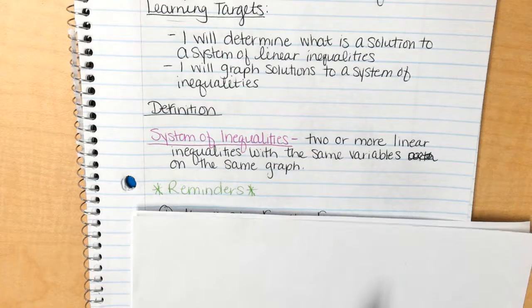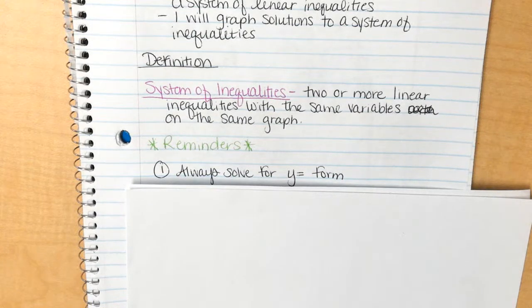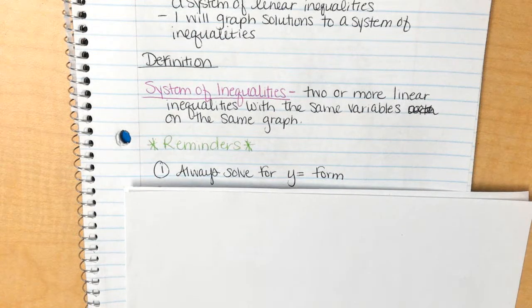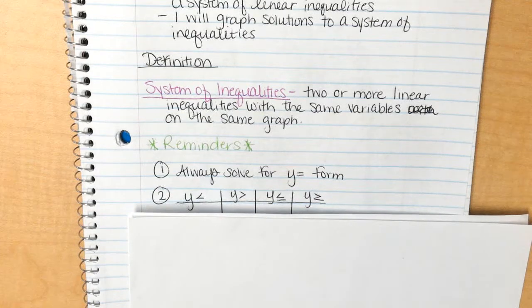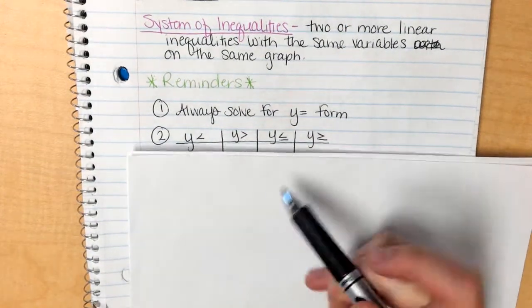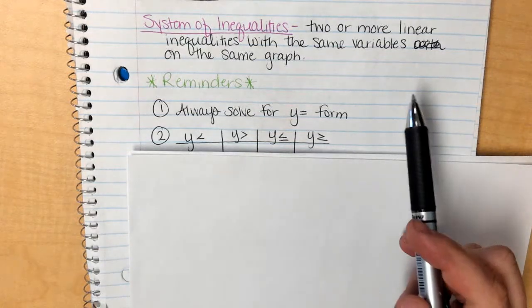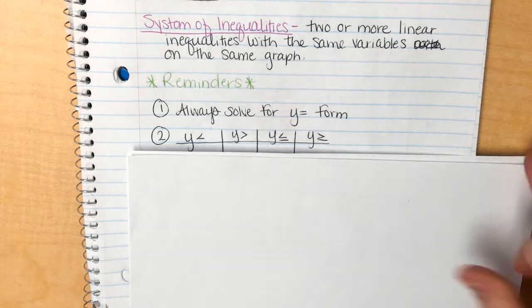So some reminders, because it's been a while. Always make sure that you solve for y equals. Super important. Thing two is this little table. We've made this table once before in our notes. I did it again just so we can make sure we remember. We always have y is less than, y is greater than, y is less than or equal to, or y is greater than or equal to, and all of them mean something different.